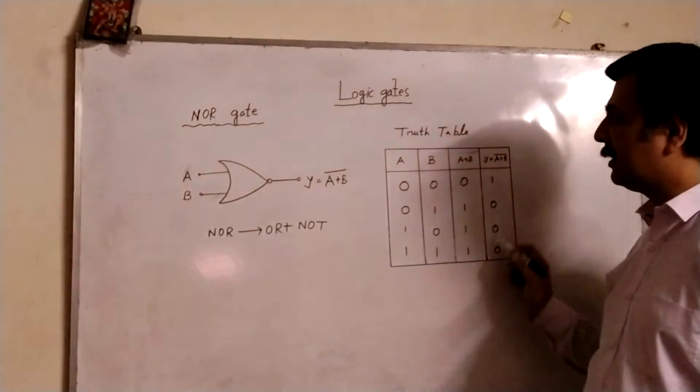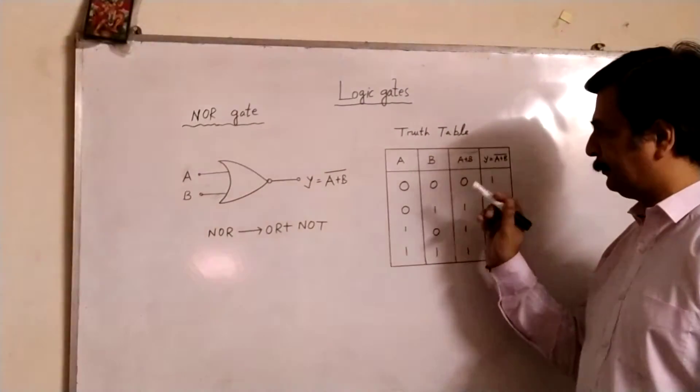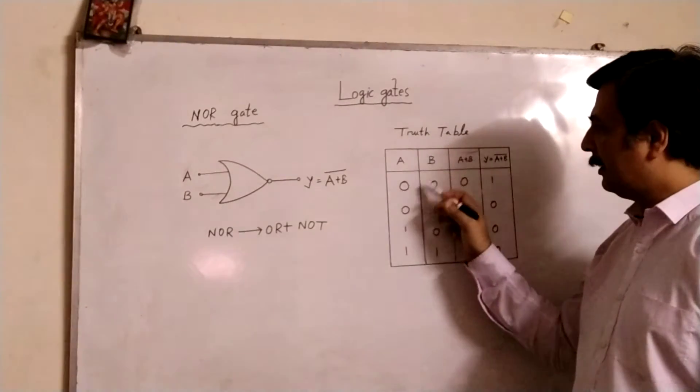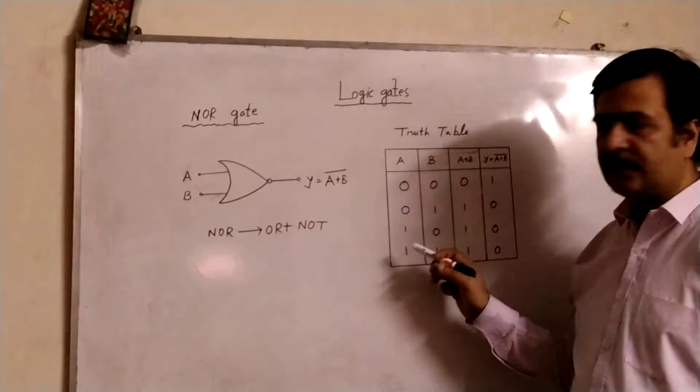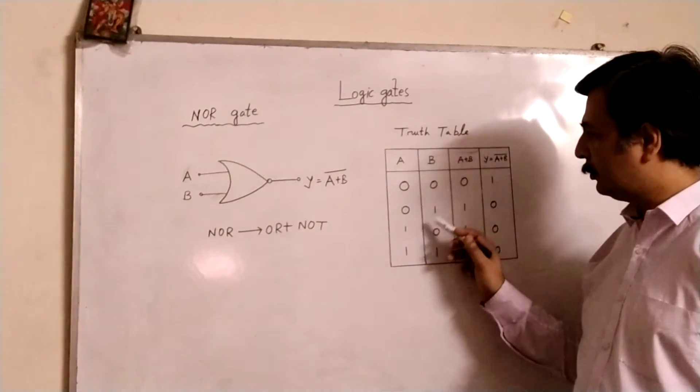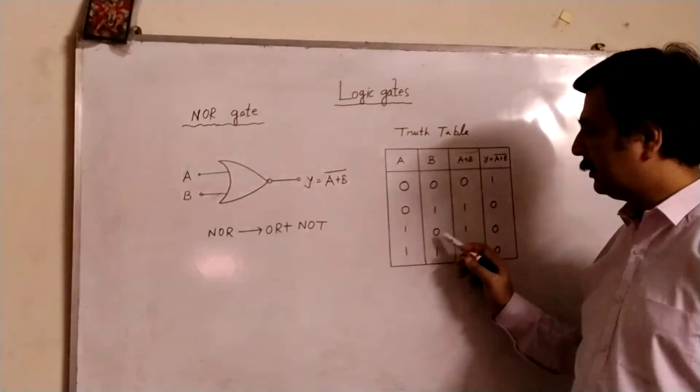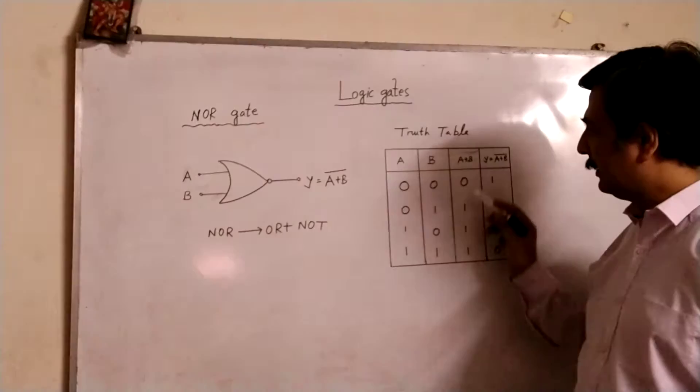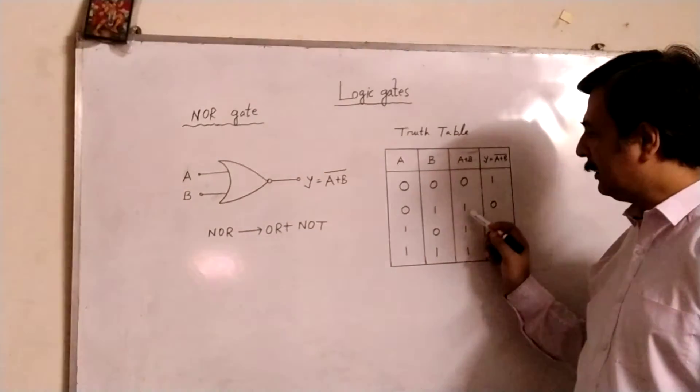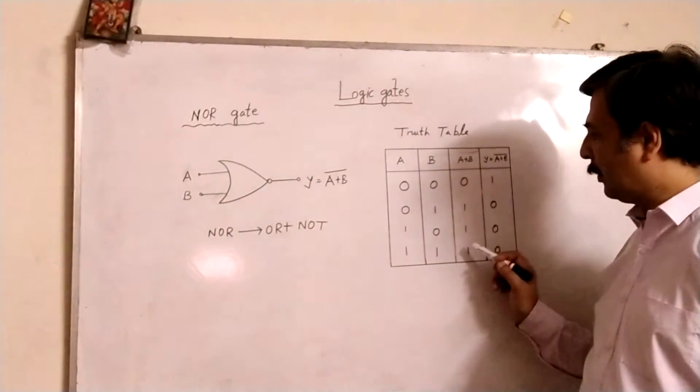So, let us discuss the truth table. A, B, I have taken A as 0011 and B as 0101. Therefore, A plus B will be 0, 1, 1 and 1.